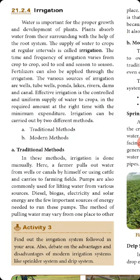Water is important for the proper growth and development of plants. The plant absorbs water from its surroundings with the help of the root system. The supply of water to crops at regular intervals is called irrigation. The time and frequency of irrigation varies from crop to crop, soil to soil, and season to season.